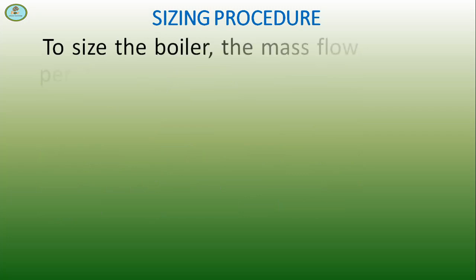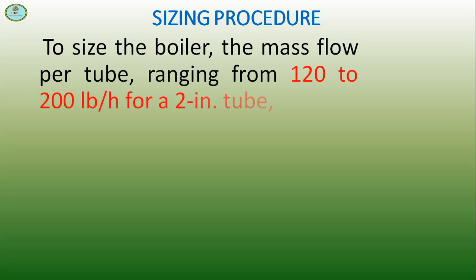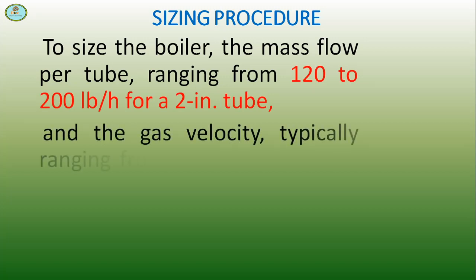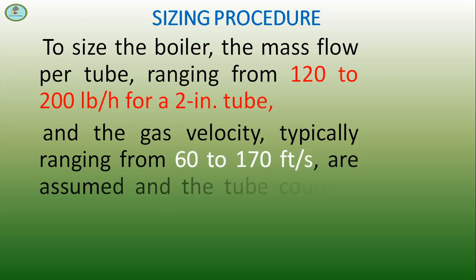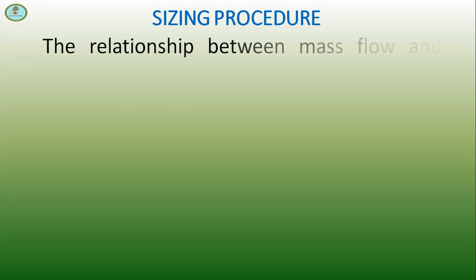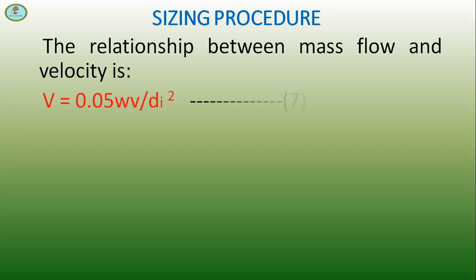To size the boiler, the mass flow per tube ranging from 120 to 200 lb/hr for a 2 inch tube, and the gas velocity typically ranging from 60 to 170 ft/sec, are assumed and the tube count is calculated. The relationship between mass flow and velocity is V = 0.05 × W × V / Dᵢ². This is equation 7.